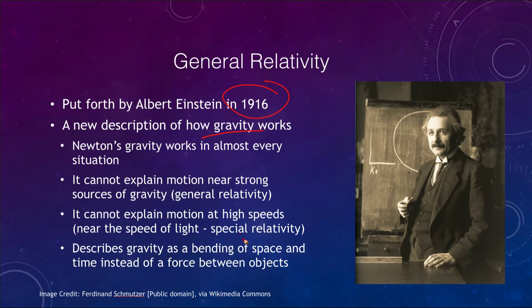Isaac Newton described gravity as a force between two objects, with each object experiencing a force pulling on it. Those were equal and opposite forces. That was a way of explaining how orbits worked. However, while it works in almost every situation, there are some cases where Newton's description of gravity does not work.